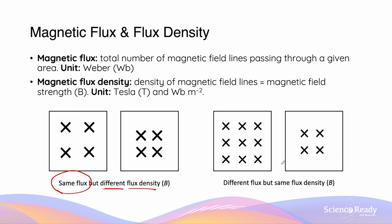In contrast, in the second pair of examples, the two areas have the same flux density because the field lines are spaced apart by the same distance, but they experience different amounts of magnetic flux. In the first one, there's a greater amount of flux as compared to a smaller amount of flux in the second area.